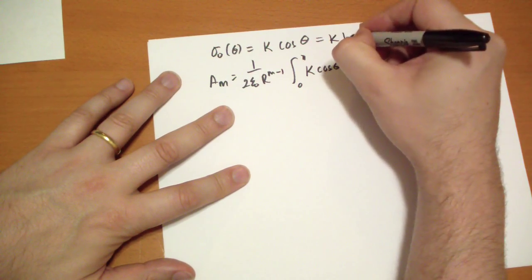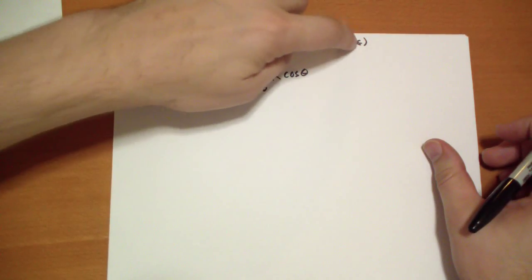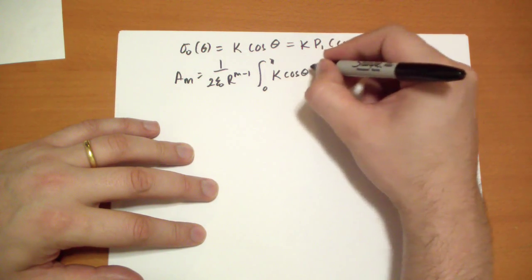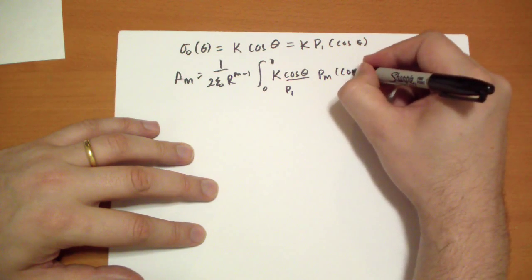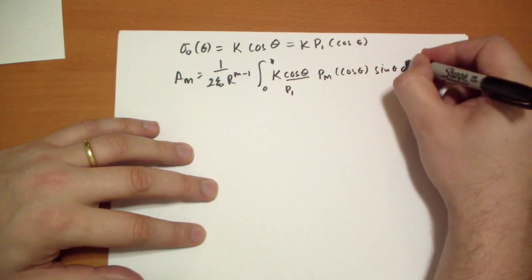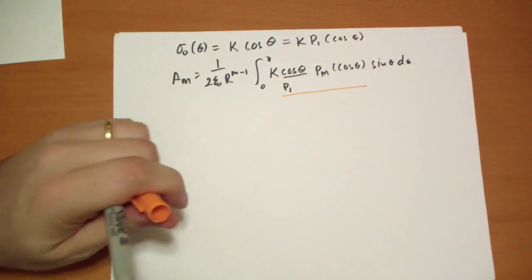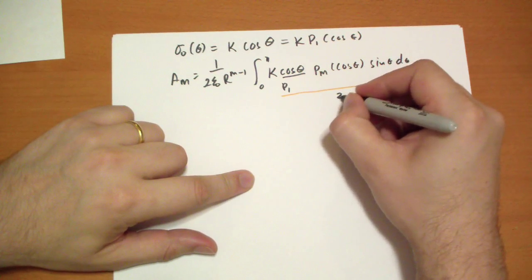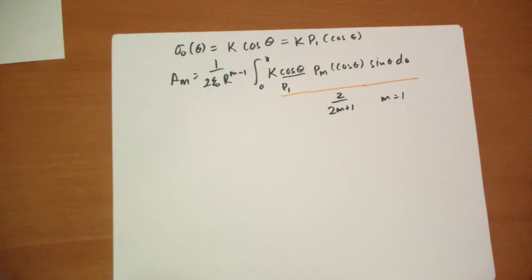Oh, by the way, this is just because the first Legendre polynomial is just whatever is inside the parenthesis. So it's x or cos theta. And then we're going to take P_m cos theta and then sin theta d theta. And, as you should recognize right away, this integral basically turns into 2 over 2m plus 1. But only when m equals 1, because that's the only Legendre polynomial we have in that sigma-naught.